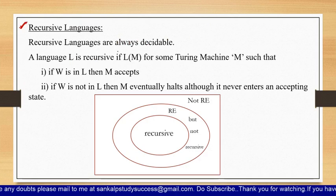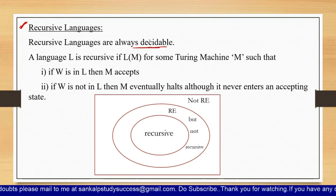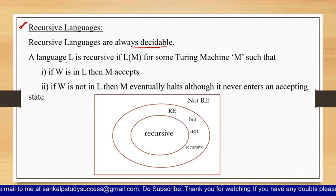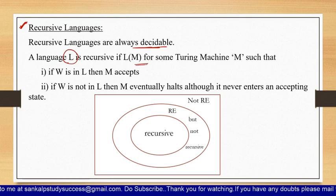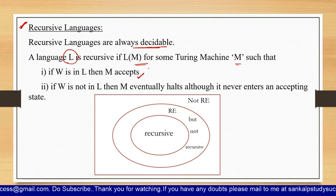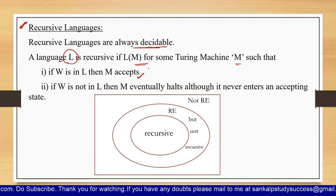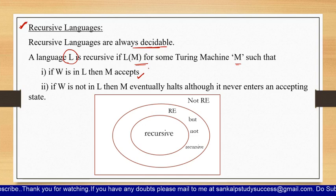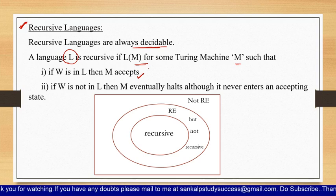Now let us see what recursive languages are. Recursive languages are always decidable. A language L is said to be recursive if, for some Turing machine M, if w is in L then M accepts, and if w is not in L then M eventually halts although it never enters an accepting state — it may halt in a non-final state, meaning the string is rejected.